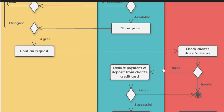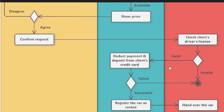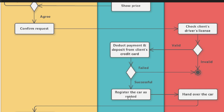If the license is valid, the system deducts payment and deposit from the client's credit card. If the license is not available, the activity diagram terminates. Even if the license is valid, if there is no money in the credit card, the payment fails and the diagram terminates as well.